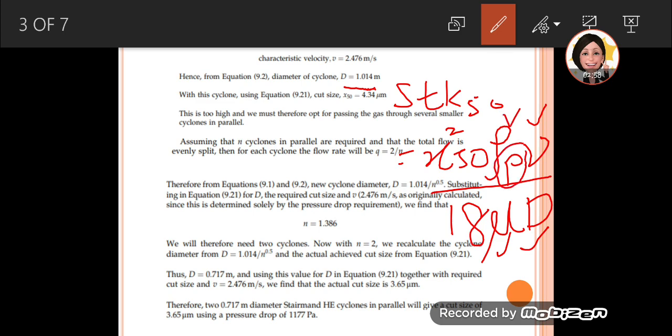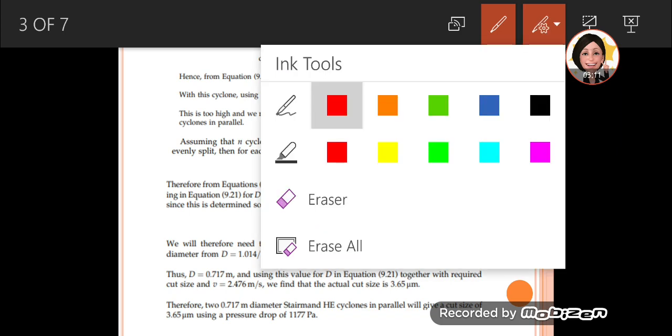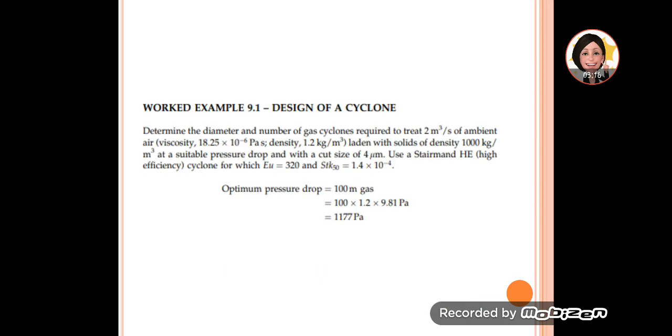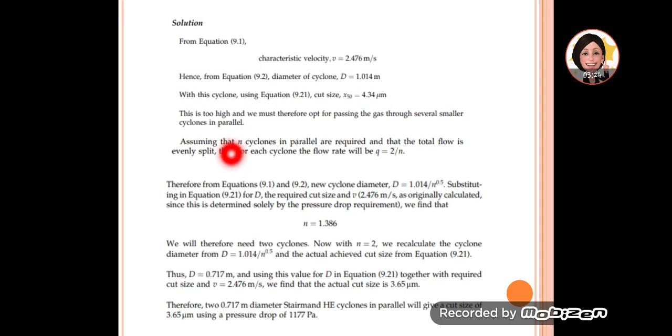We can find the cut size for this cyclone. From this cut size, we can see it's more than the cut size given in the question. The desired cut size in the question is 4 micrometer. This is too high, so we must opt for passing the gas through several cyclones in parallel.